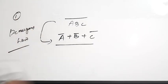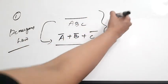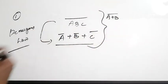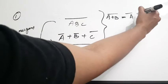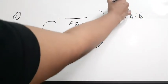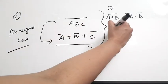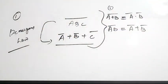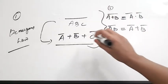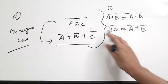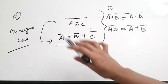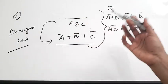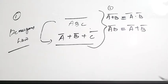De Morgan's Law is a very important and useful law in Boolean simplification. It states that (A + B) complement equals A complement · B complement — that is the first law. And (A·B) complement equals A complement + B complement — that is the second law. Applying this to three variables, ABC bar equals A bar + B bar + C bar. So the correct answer is option D.